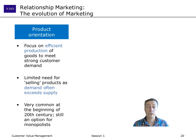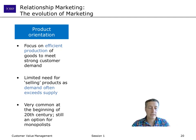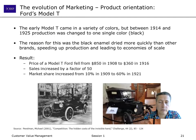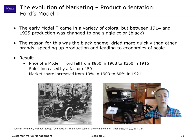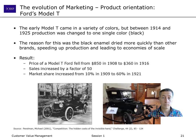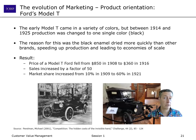If you're in a situation where demand massively exceeds supply, most classical things in marketing become irrelevant. What becomes relevant is efficiency — getting stuff out of the factory to consumers as fast as possible. This is essentially the story of Ford's Model T: the first car produced at large scale using moving assembly lines. From 1914 to 1925, the color of the Ford Model T was switched from a multitude of colors to just black.